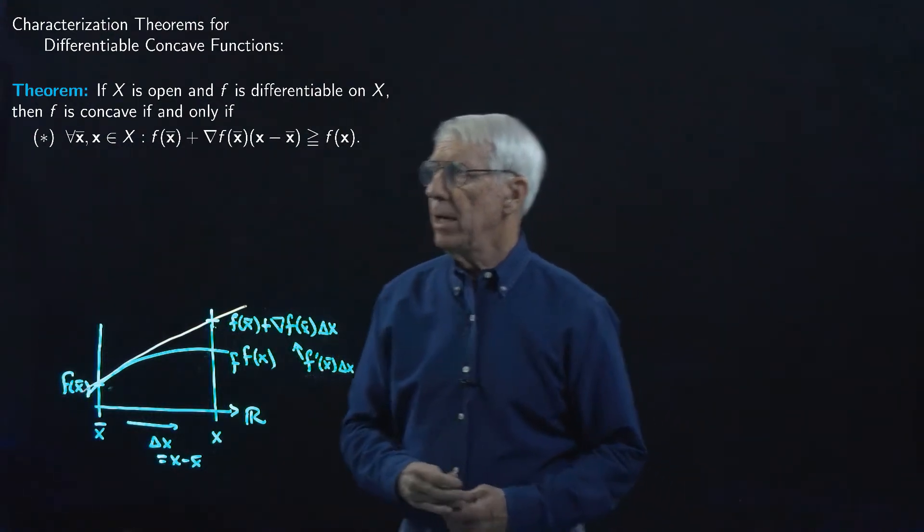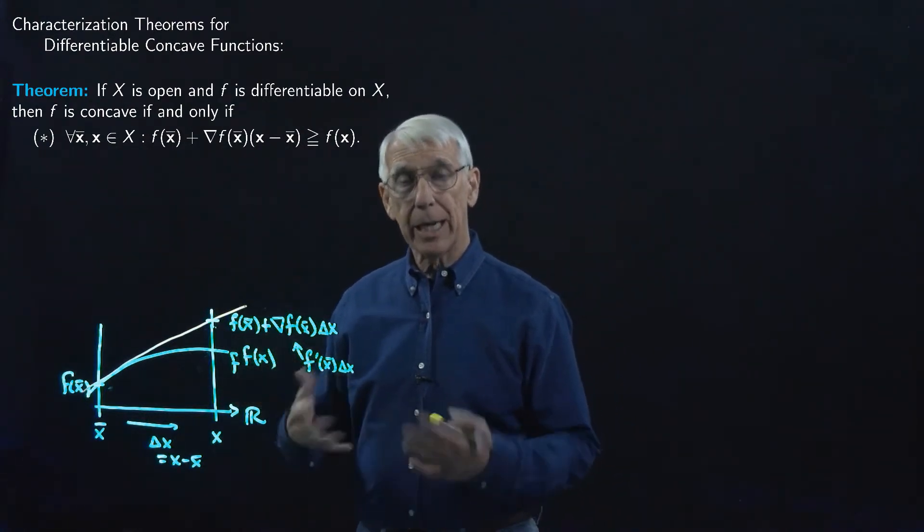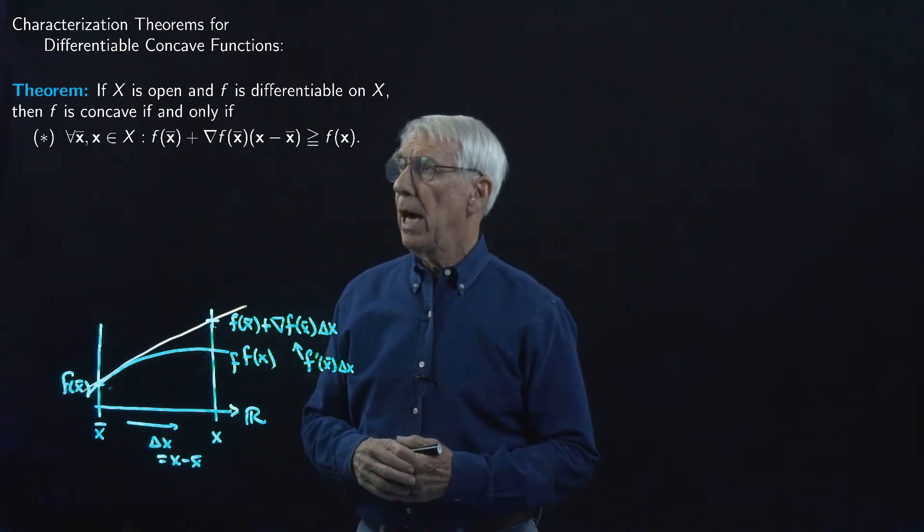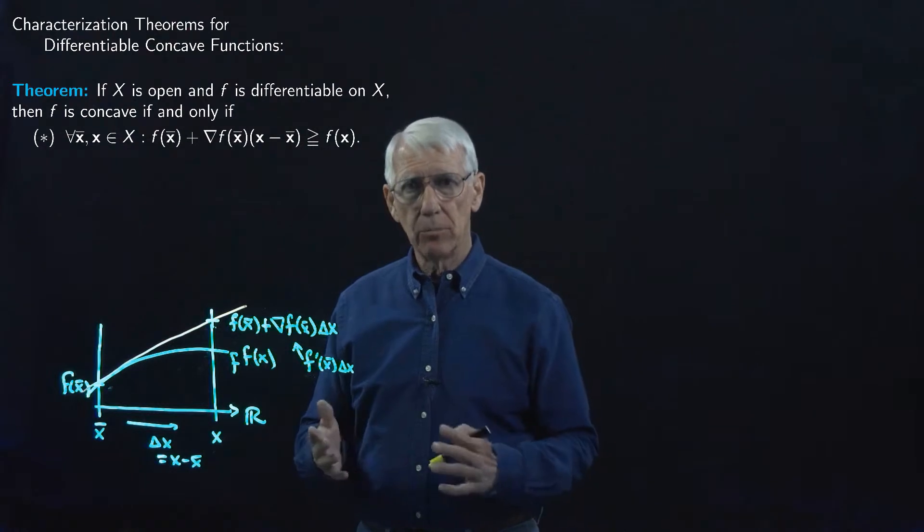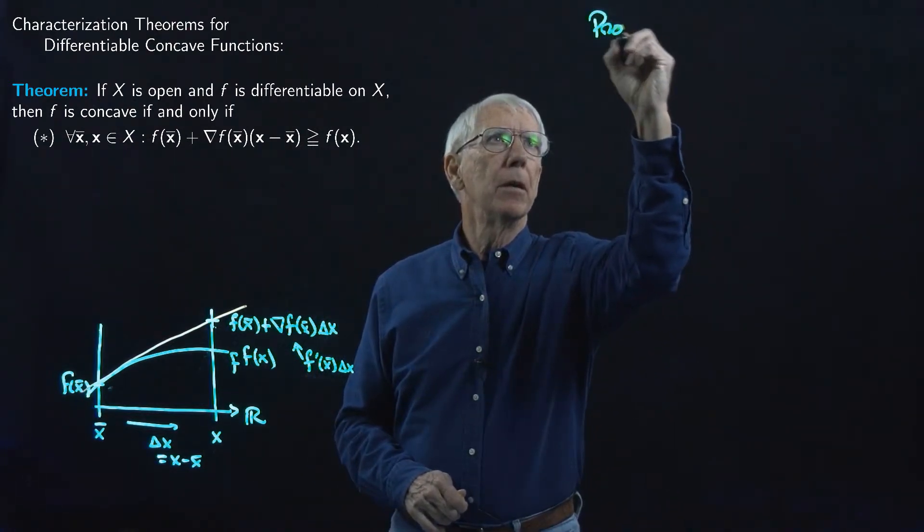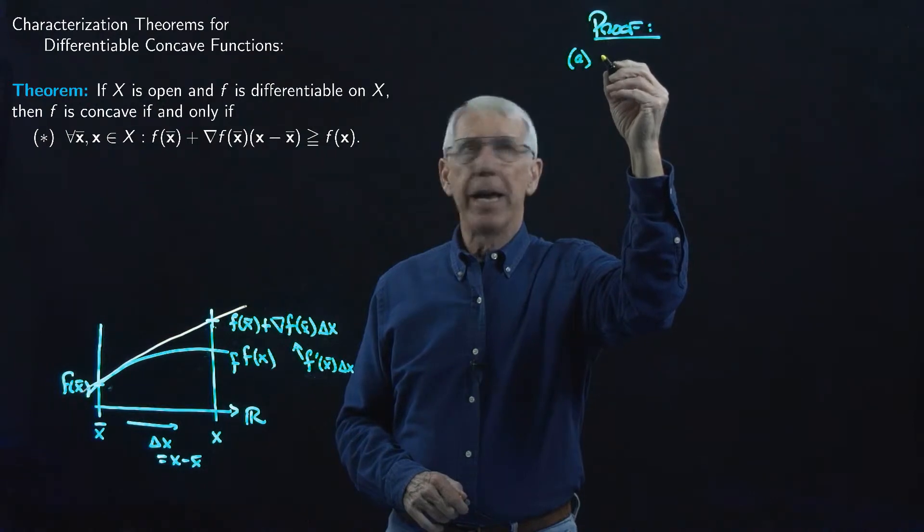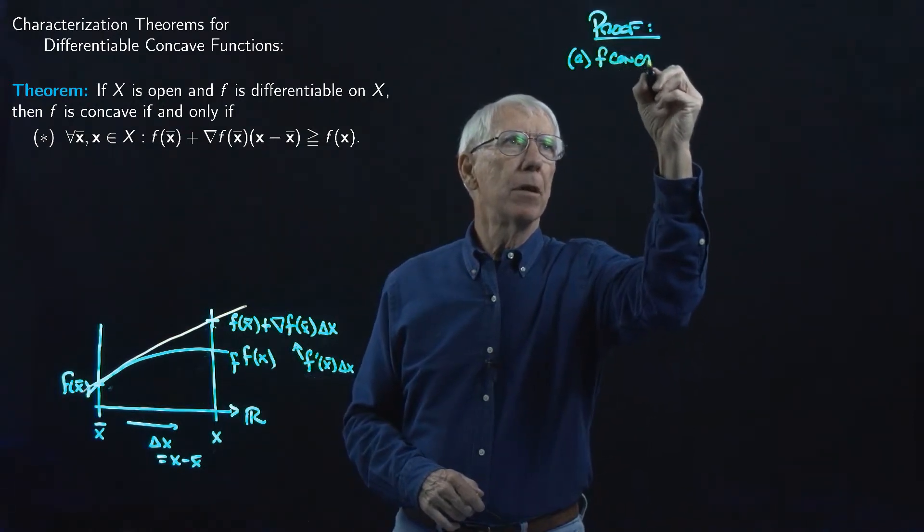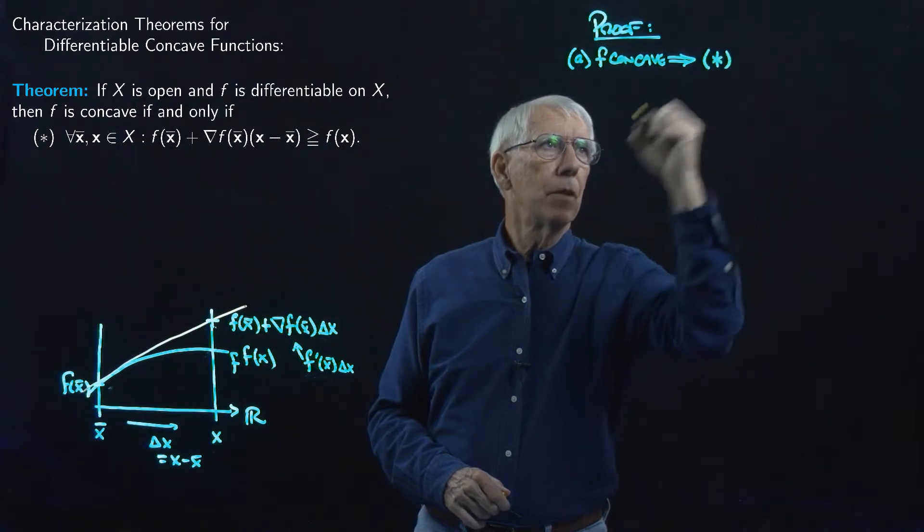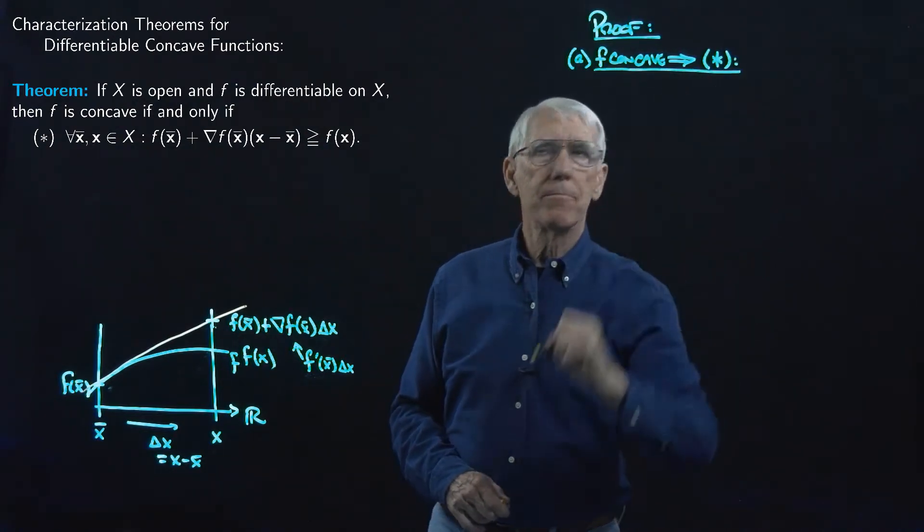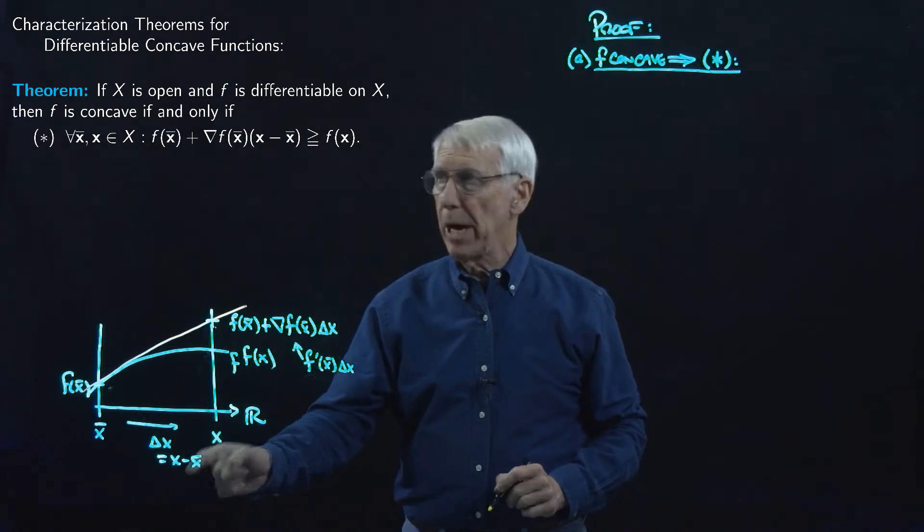So let's see if we can prove this theorem. It says if and only if, so it is a characterization of concave functions in terms of first derivatives. So it's if and only if, so we're going to have to go both ways. So let's do a proof over here. I'll first do the proof in which we'll say that if F is concave, that implies the condition star. So we're taking an arbitrary X-bar and an X, and I'm letting delta X be the difference X minus X-bar.